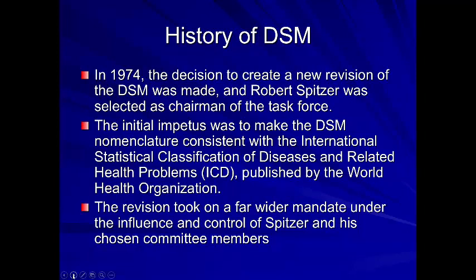Big changes came for the DSM in 1974 with the decision to make a new revision. Robert Spitzer was selected as chairman of the task force and chaired the DSM-III and DSM-III-R. He was based out of Columbia University's New York Psychiatric Institute and was seminal in shaping the way psychiatric diagnoses are viewed today. He passed away recently. Spitzer and his group wanted to make the DSM nomenclature consistent with the International Statistical Classification of Diseases and Related Health Problems — the ICD — published by the World Health Organization.